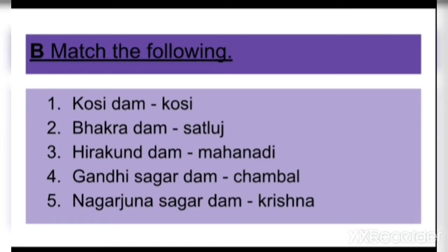Question B: Match the following. First: Kosi Dam — Kosi. Second: Bhakra Dam — Sutlej. Third: Hirakud Dam — Mahanadi. Fourth: Gandhi Sagar Dam — Chambal. Fifth: Nagarjuna Sagar Dam — Krishna.